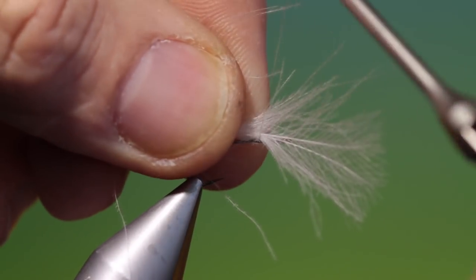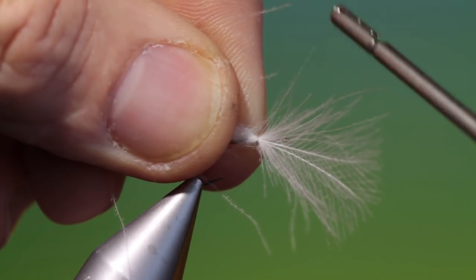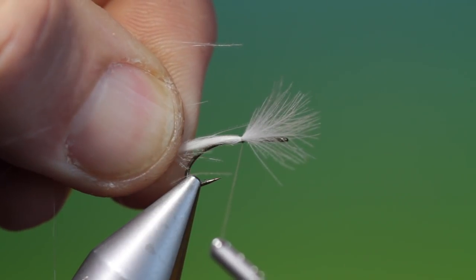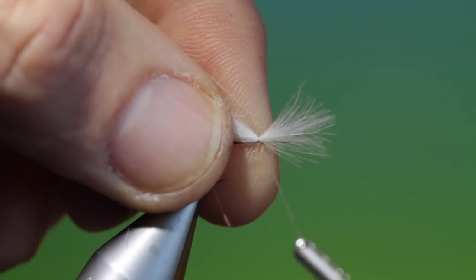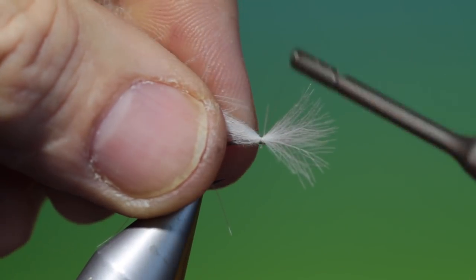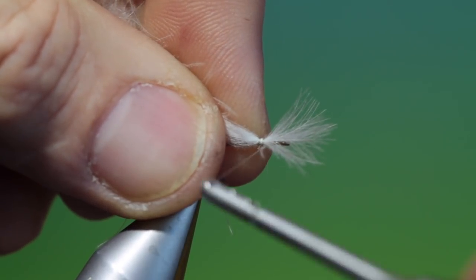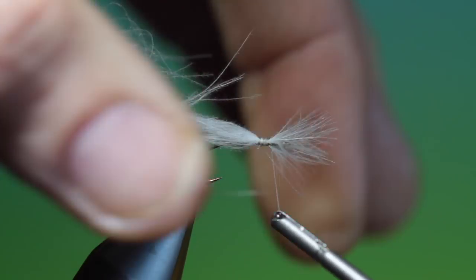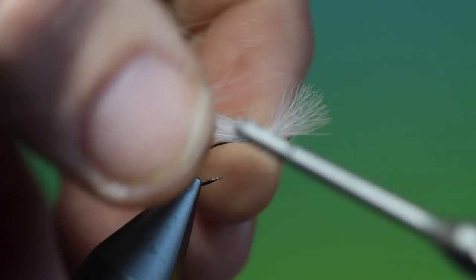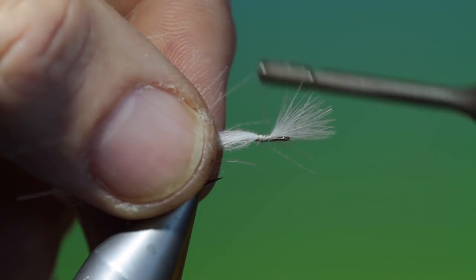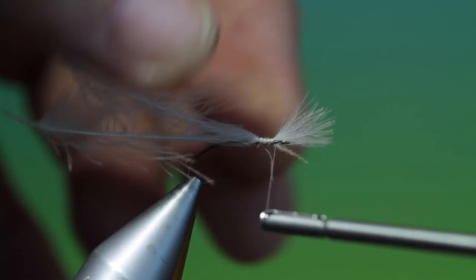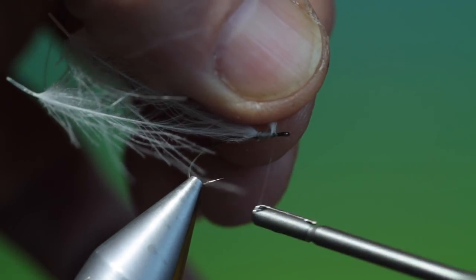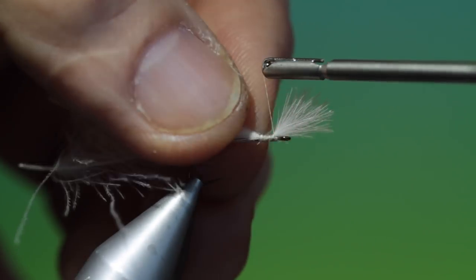I need two white CDC, a couple of loose turns and we just pull these through, line up the ends. We go forward with these. Keep everything on top of the hook shank.